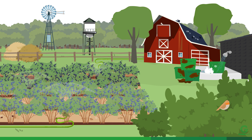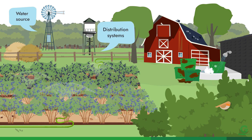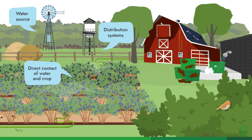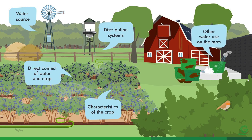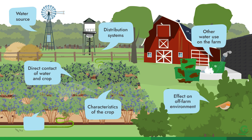Some important considerations of the risk assessment are: What are the water sources? Are the distribution systems open or closed? Do the irrigation methods allow water to come into direct contact with the crop? What are the characteristics of the crop? Is there significant water use for other activities on the farm? How do farming activities affect off-farm environments? And additional criteria as stated in the principles and criteria.